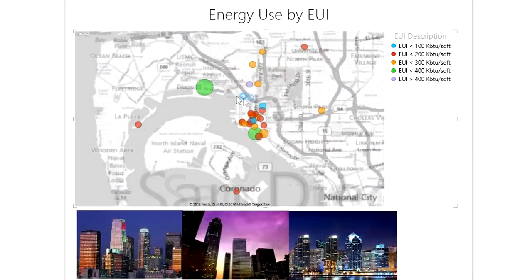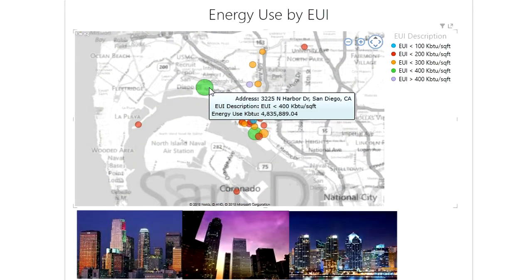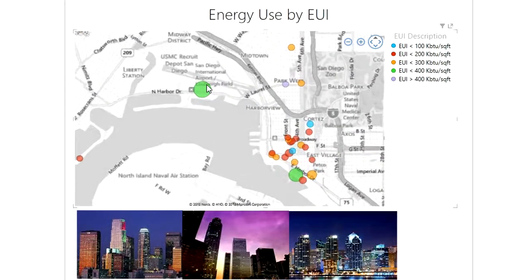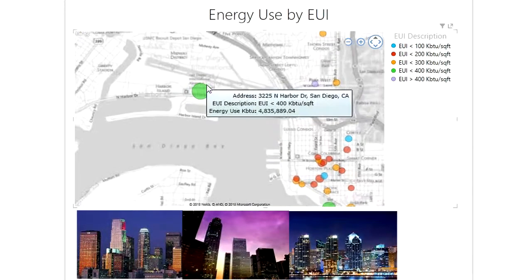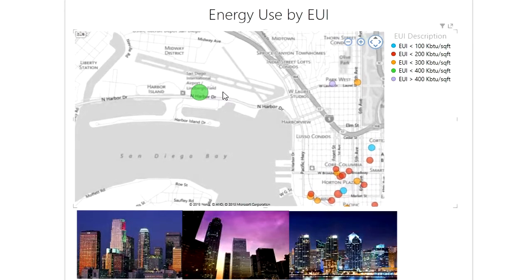If you look at what OSIsoft does, you can start to see things like what are the chances that my public works vehicles will be operating in the capacity that they need, as well as do I have the right people and the right work schedules to make this happen. As you've got PI servers that are implemented and data is being aggregated, and as you look at the new Cloud Connect capabilities, all of the different services that you're seeing will become plug-and-play — snappable within this environment.